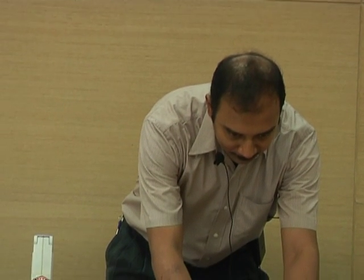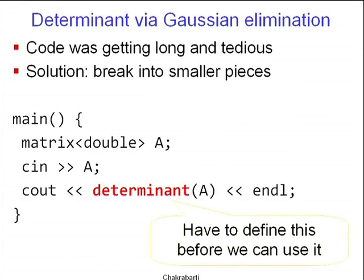So why do we need all these ampersands? Backing up for a moment, suppose I want to write this finding-determinants-by-Gaussian-elimination code. The code was getting too long and tedious, so the solution is to break it into smaller pieces. We start with main: declare matrix<double> A, read A from cin, and then output determinant(A). Of course determinant hasn't been defined yet in general. So what should determinant do? We have to define determinant before we can use it, just like square root and log and power were all defined before we used them.